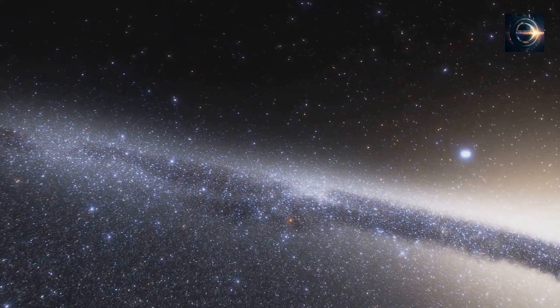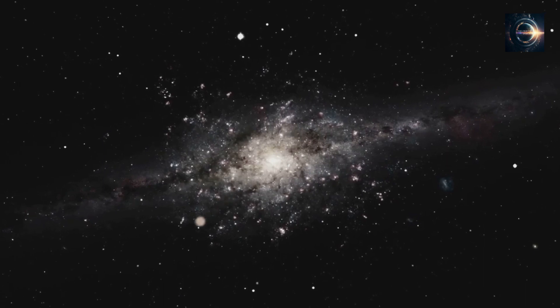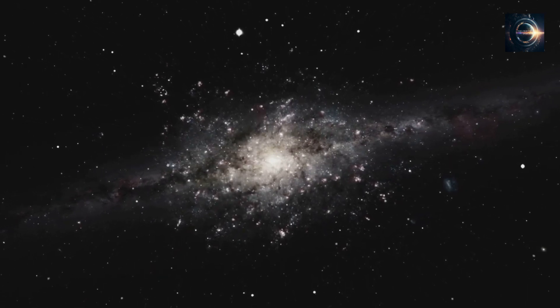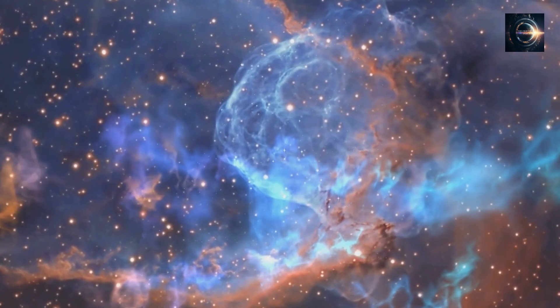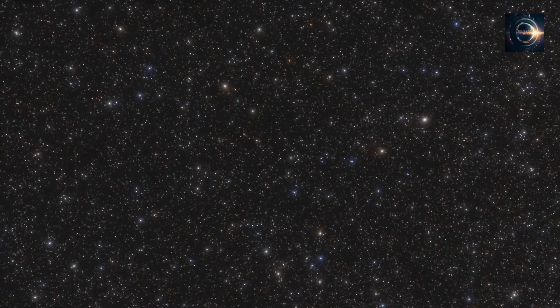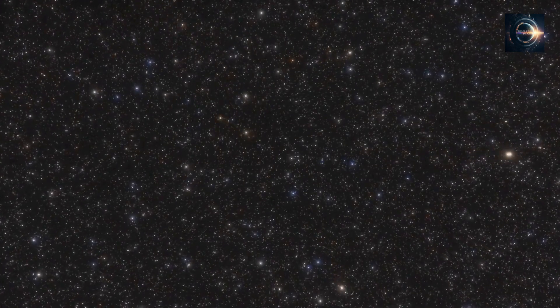What if I told you that astronomers have discovered a galaxy that emits no visible light? And that this discovery could help solve one of the biggest mysteries in extragalactic astronomy? This mysterious dark galaxy is composed mostly of dark matter, and its properties challenge our understanding of extragalactic astronomy. But how did astronomers find it, and why is it so important? Keep watching to find out.